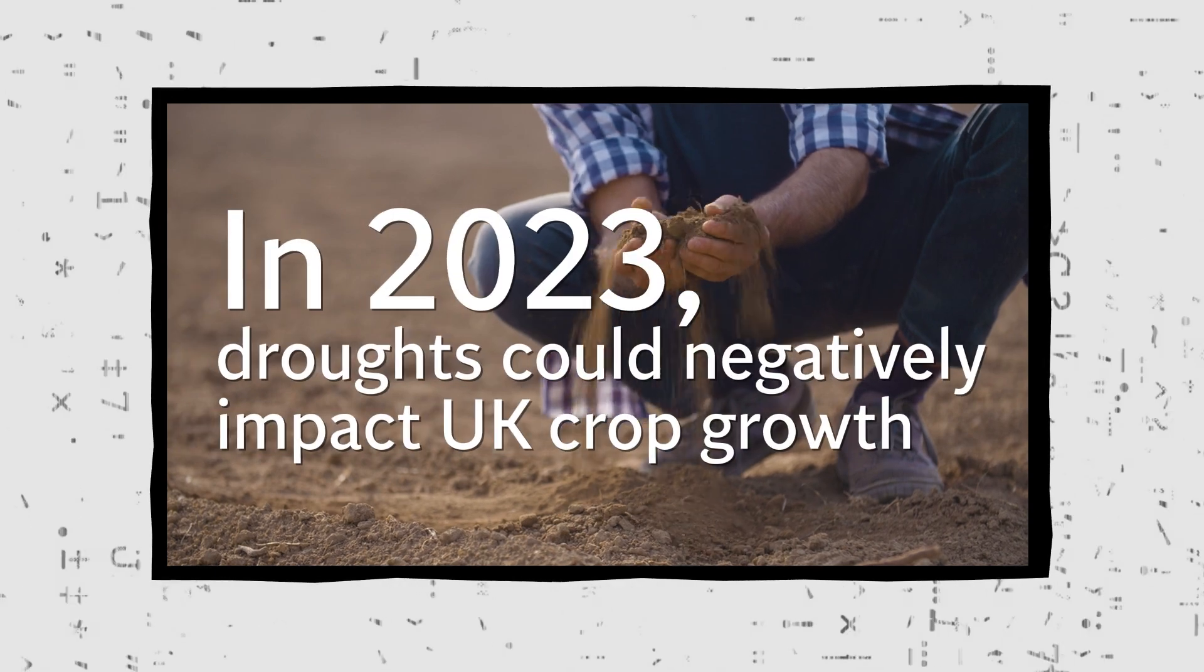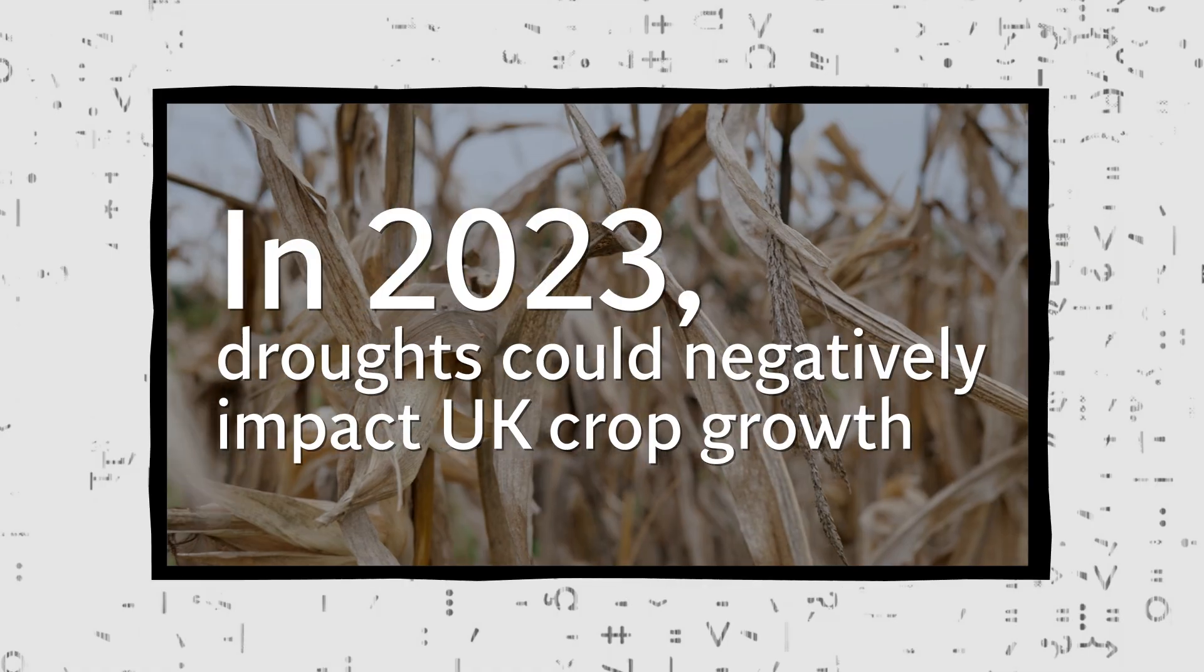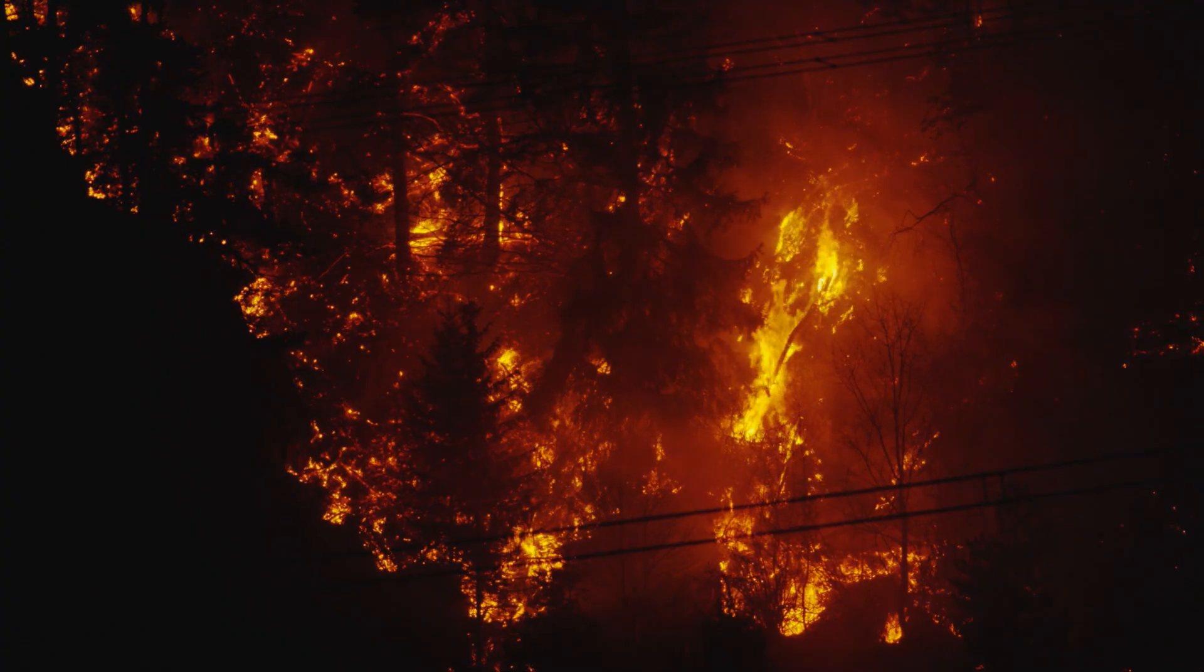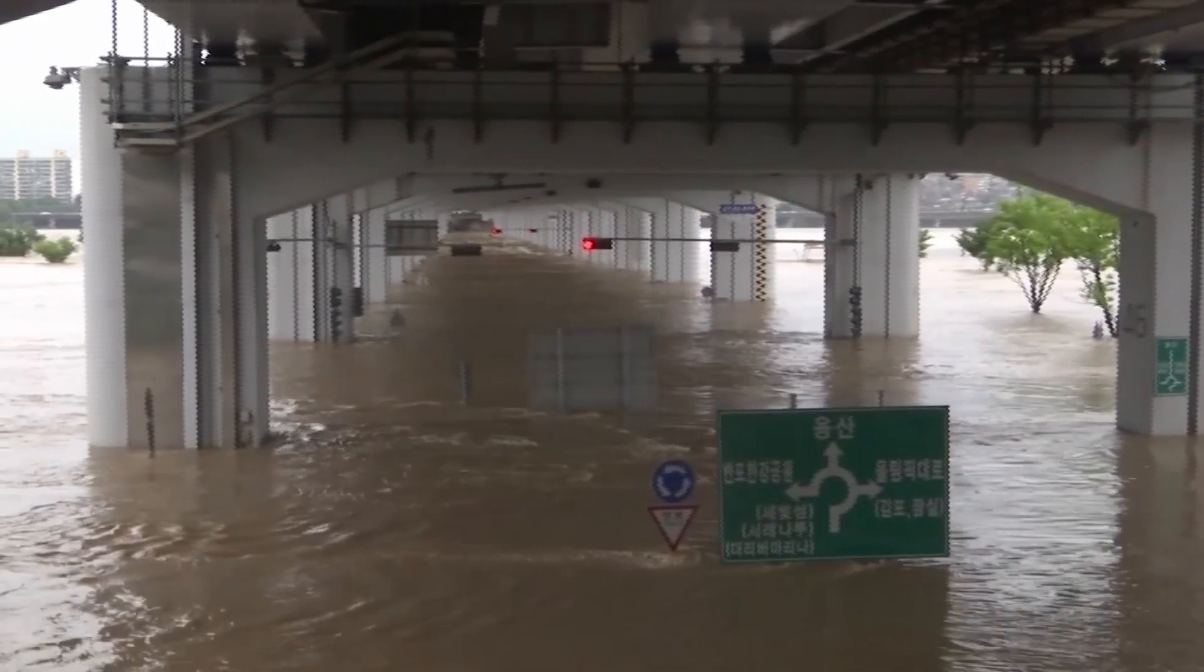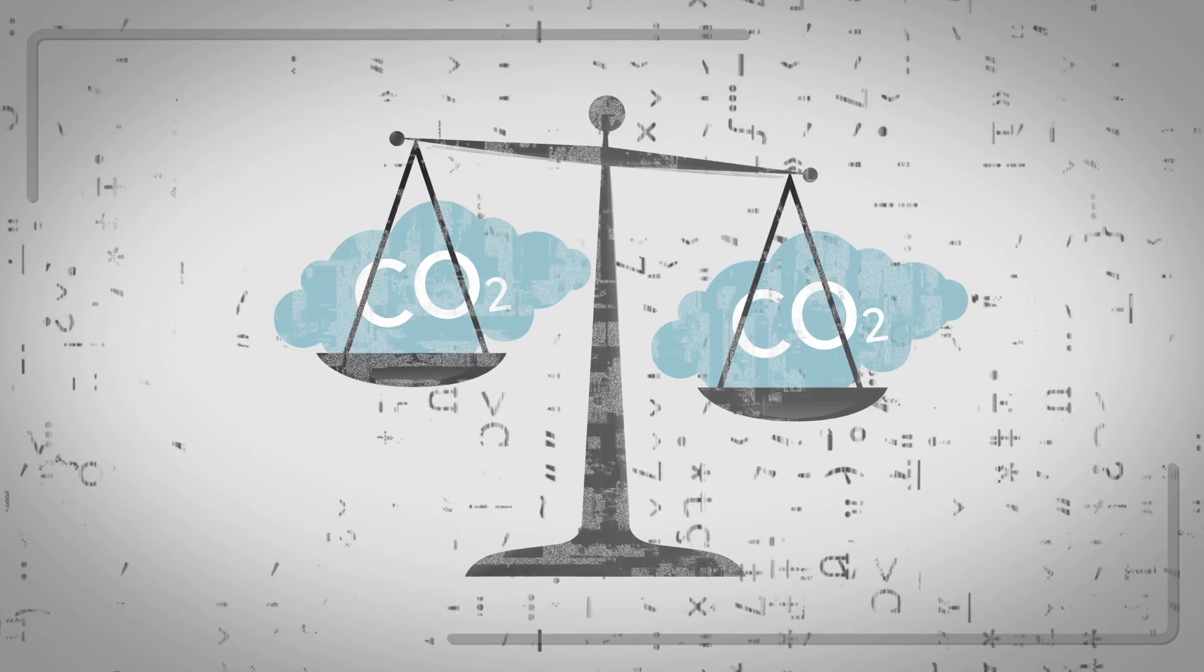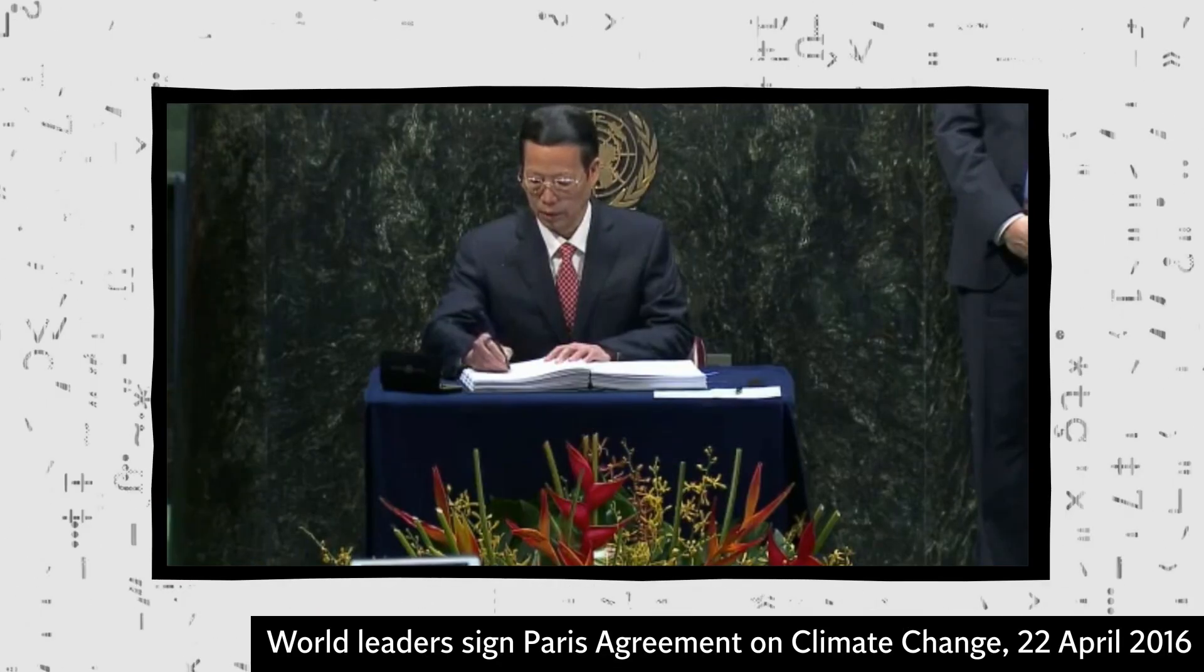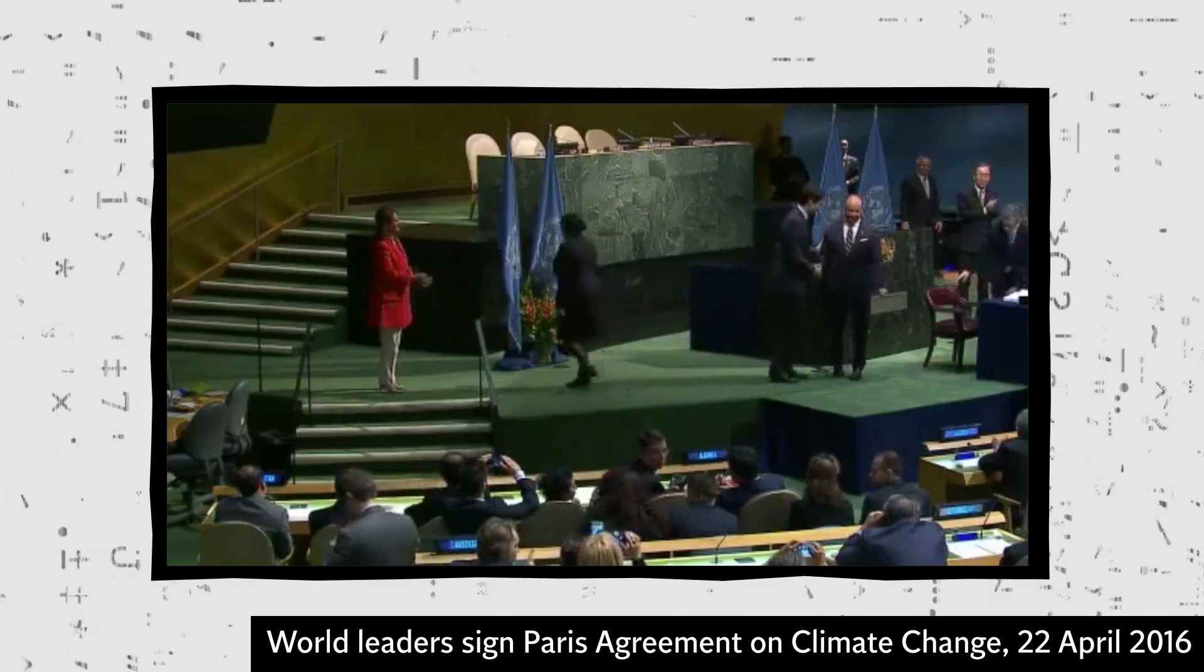It's predicted that in 2023, droughts could see UK farmers struggle to grow fruit and vegetables. Scientists say temperatures will continue to rise, and these events will get even worse until we reach net zero. This is the point at which the amount of carbon emissions we're removing from the atmosphere is at least equal to what we're adding. To achieve net zero, experts say world leaders must rapidly transfer to renewable energy, which produces little to no emissions.